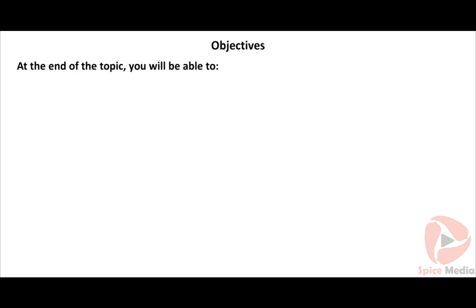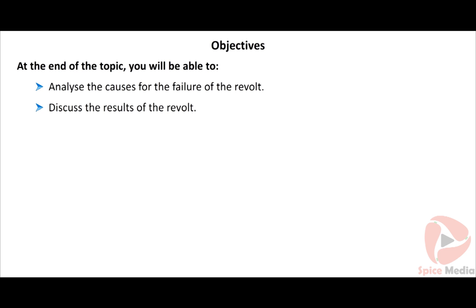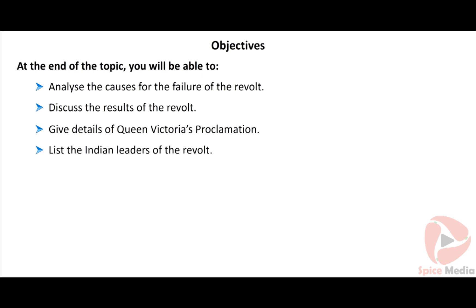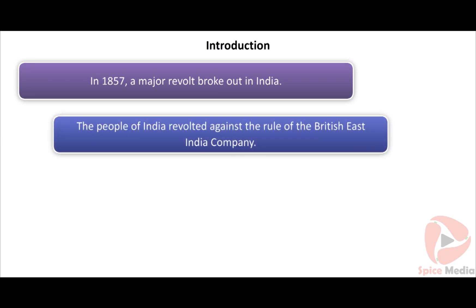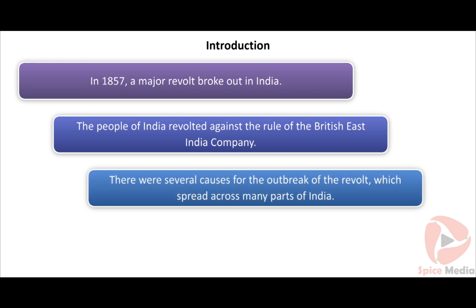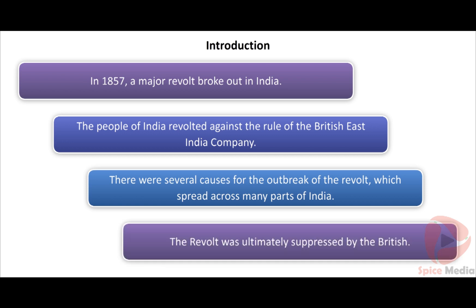At the end of this topic, you will be able to analyze the causes for the failure of the revolt, discuss its results, give details of Queen Victoria's proclamation, and list the Indian leaders of the revolt. Introduction: In 1857, a major revolt broke out in India. The people of India revolted against the rule of the British East India Company. There were several causes for the outbreak of the revolt, which spread across many parts of India, but it was ultimately suppressed by the British.